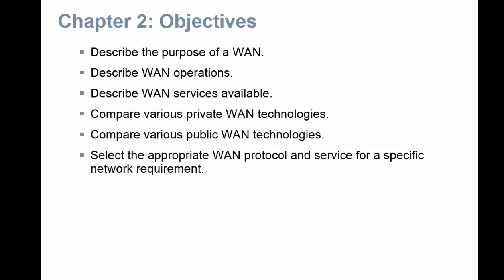What you need to make sure you pay attention to and are able to do by the end of chapter two: you need to be able to describe the purpose of a WAN, describe WAN operations, describe WAN services that are available, compare the various private WAN technologies along with the public WAN technologies, and then select the appropriate WAN protocol and service for specific network requirements.